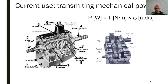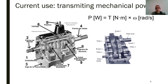It's worth reminding you of the formula for mechanical power transmitted by a rotational gear or motor. This formula applies both at the input and at the output: power in watts equals the product of the torque (normally in newton-meters) times the angular speed in radians per second.